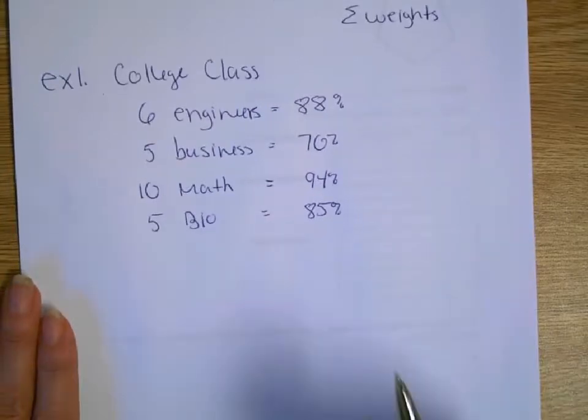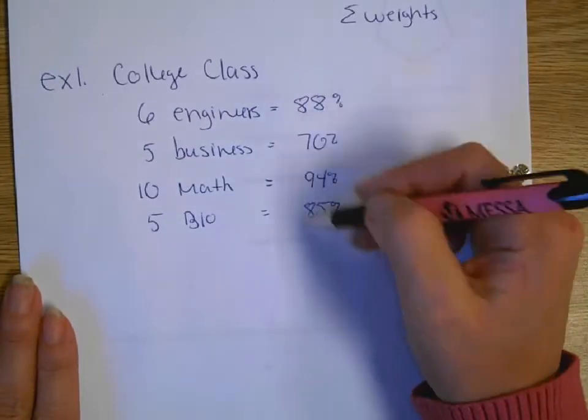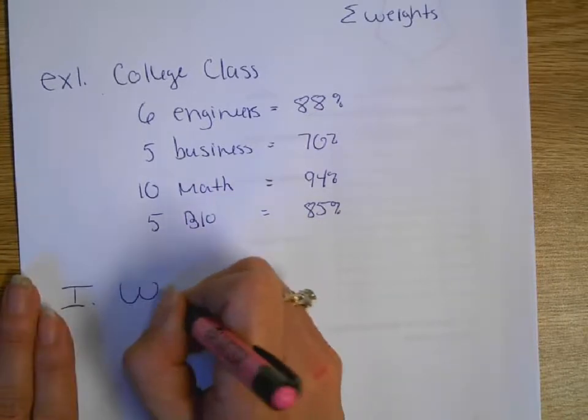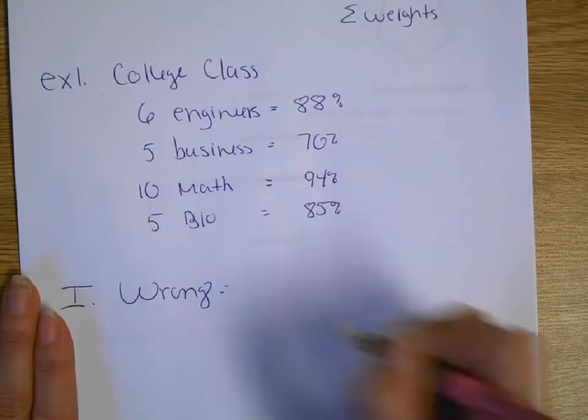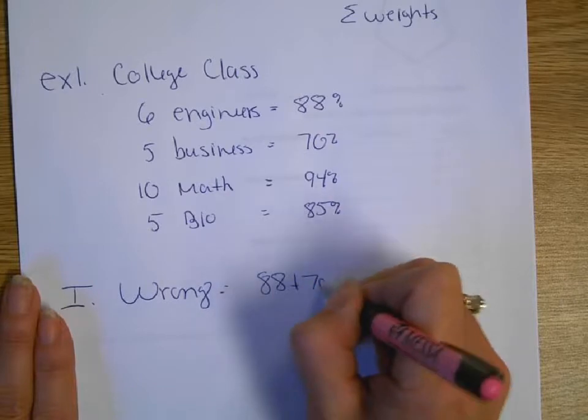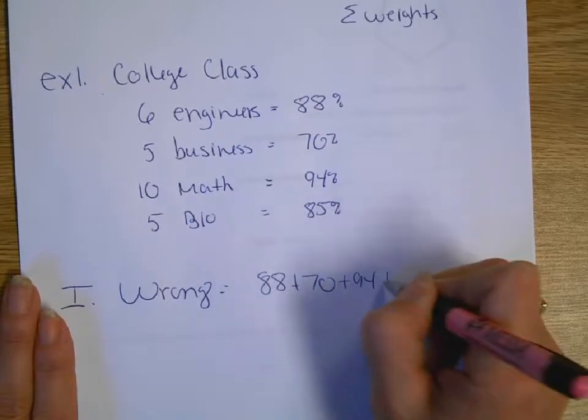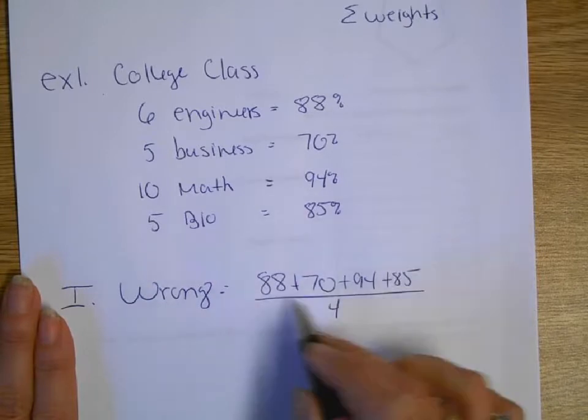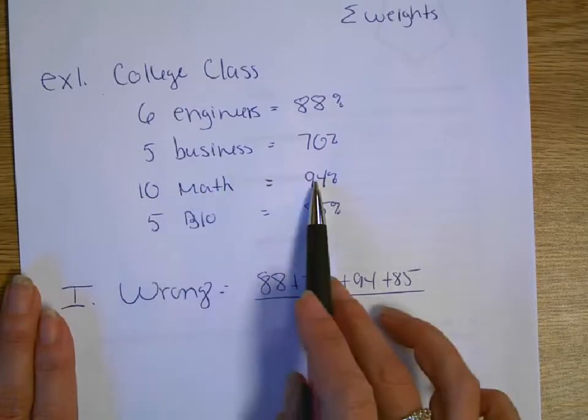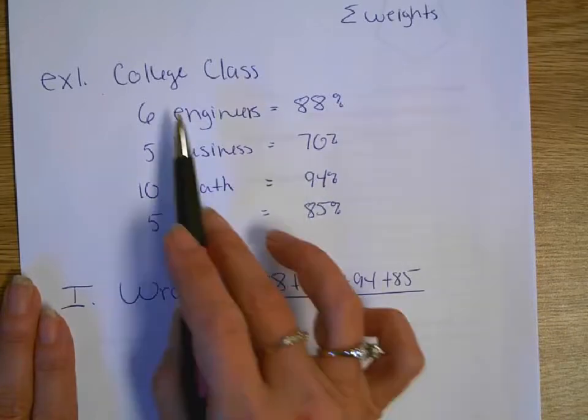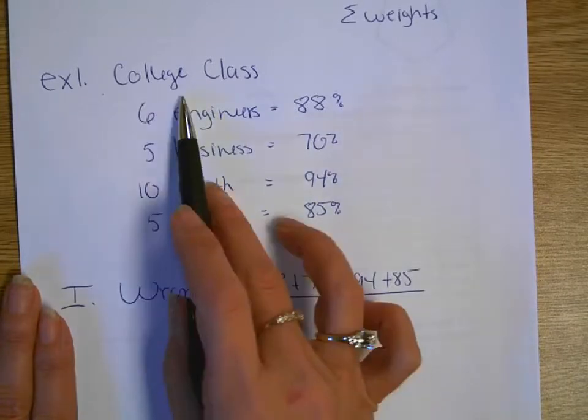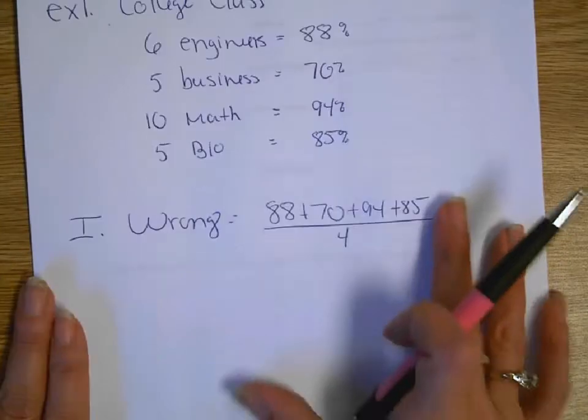So, I'm going to look at the wrong way to do that. A lot of people see this and say, oh, I'm just going to average up these 4 values. So, it's healthy sometimes to look at the wrong way. So, the wrong thing to do, because people want to do it, is just average up those 4 scores. 88 plus 70 plus 94 plus 85, divided by 4, because I have 4 values. But, you've got to realize, we've got weighting here. 10 of these people had a 94 average. 5 of them had a 70. So, there's some weighting by the number of people in the class. So, we've got to incorporate that weighting.